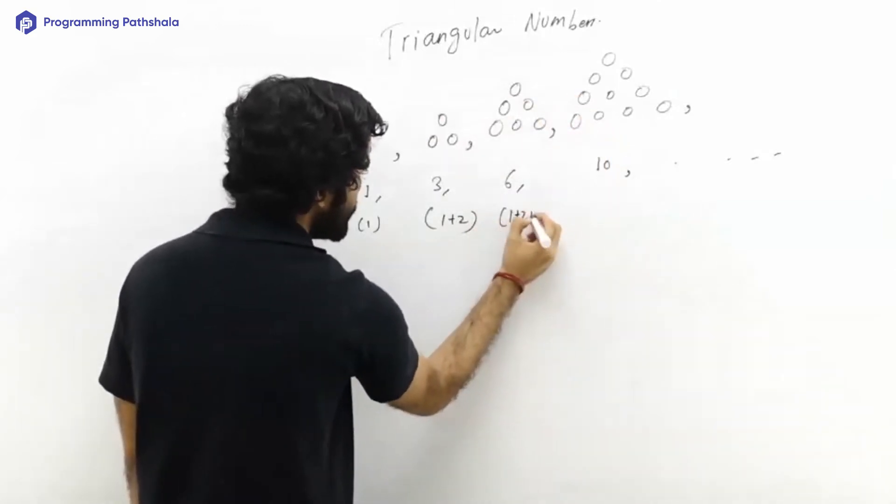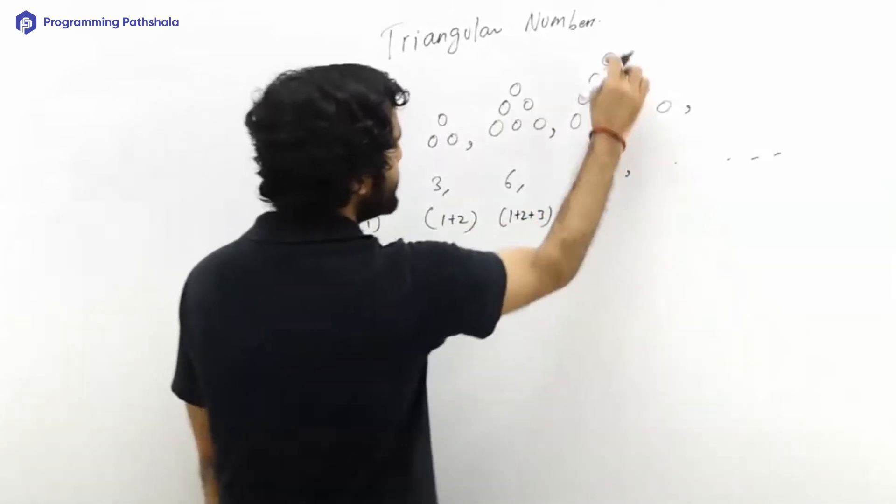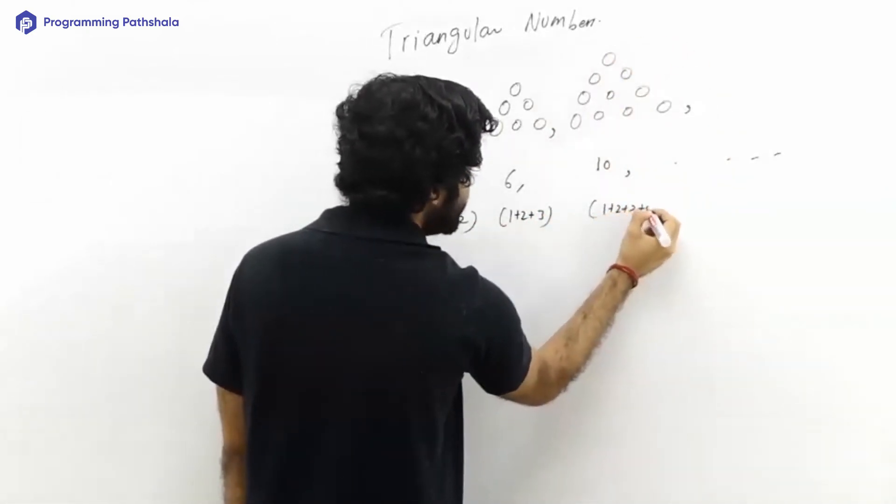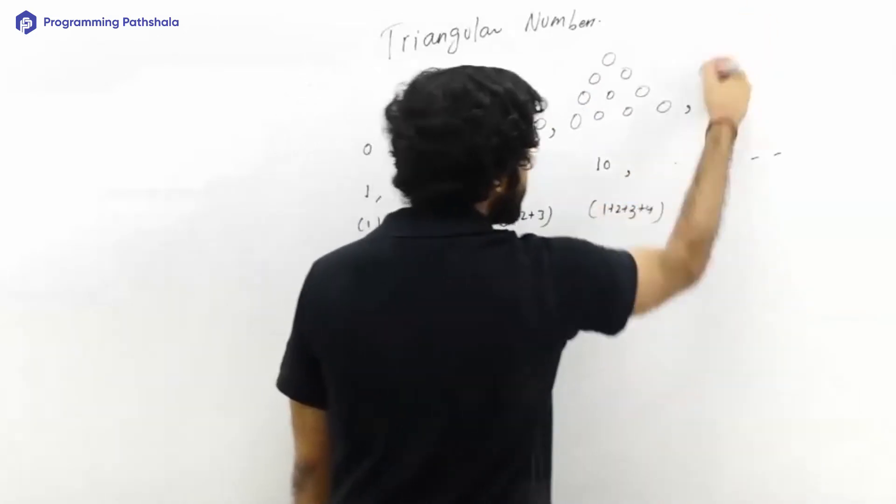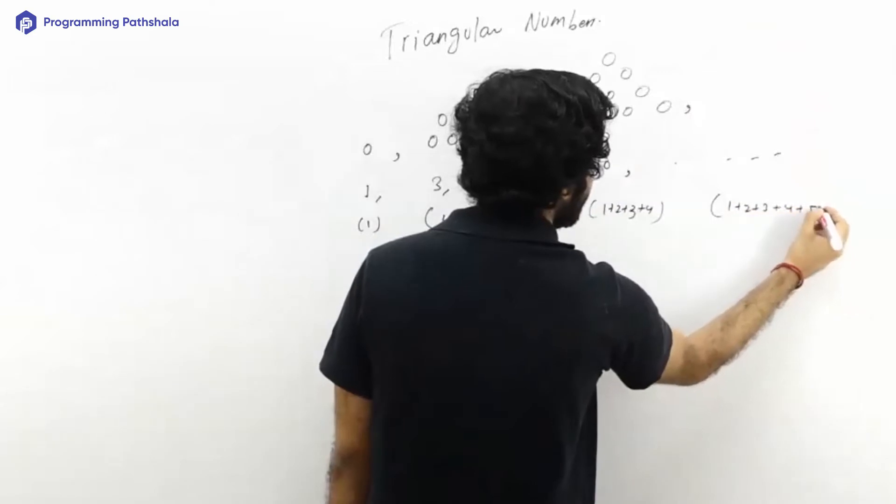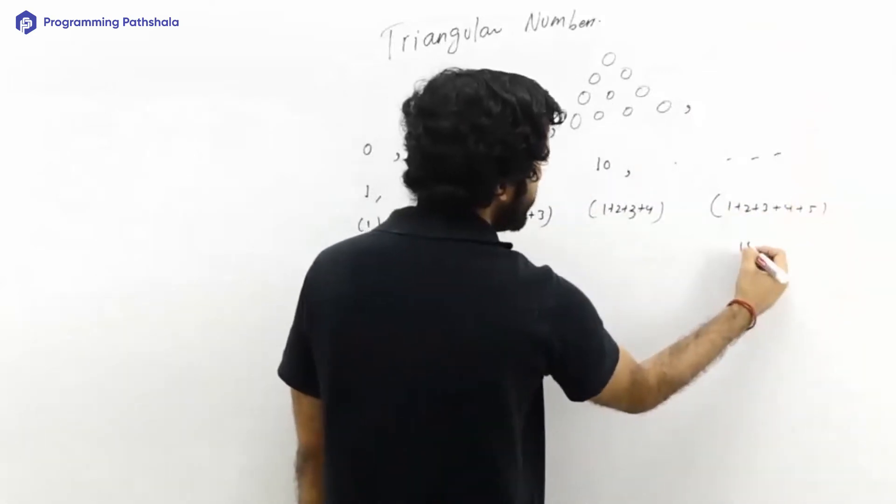The six is one plus two plus three, and similarly this ten is one plus two plus three plus four. So common sense says that the next one will be one plus two plus three plus four plus five, and this thing is going to be 15.